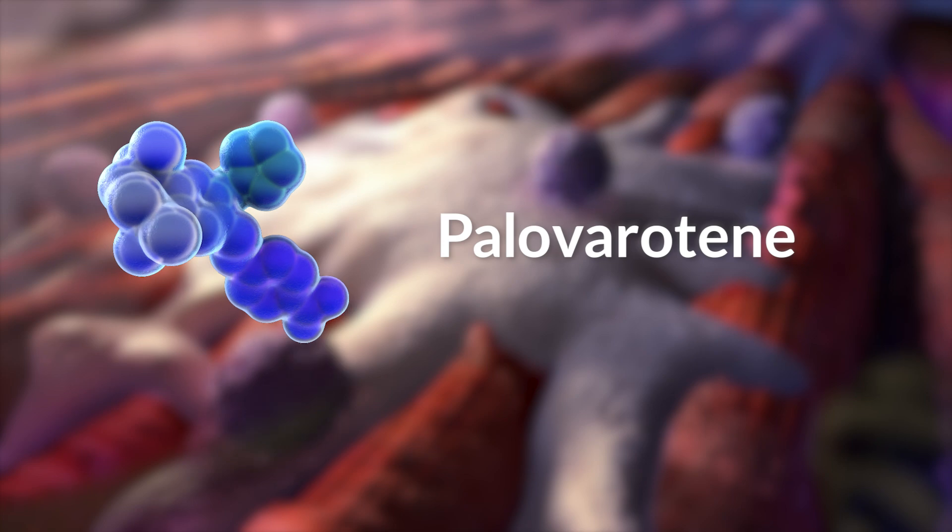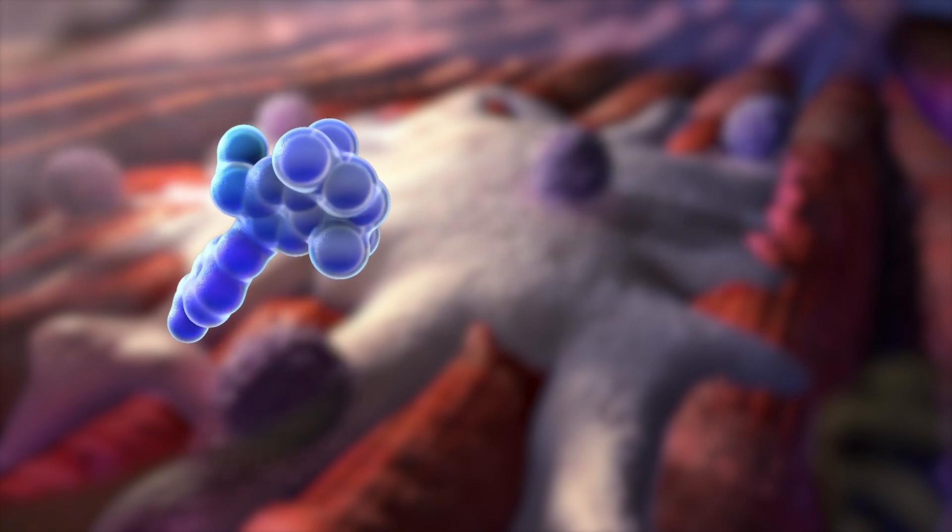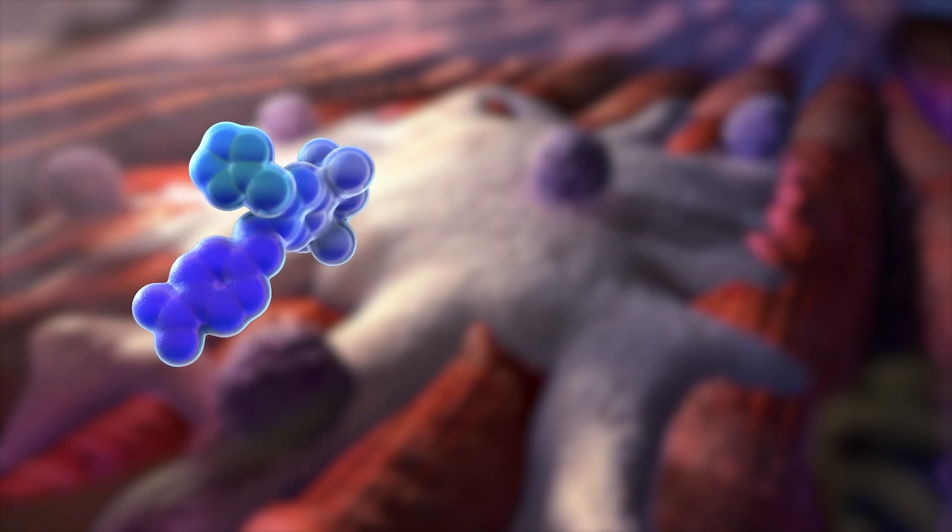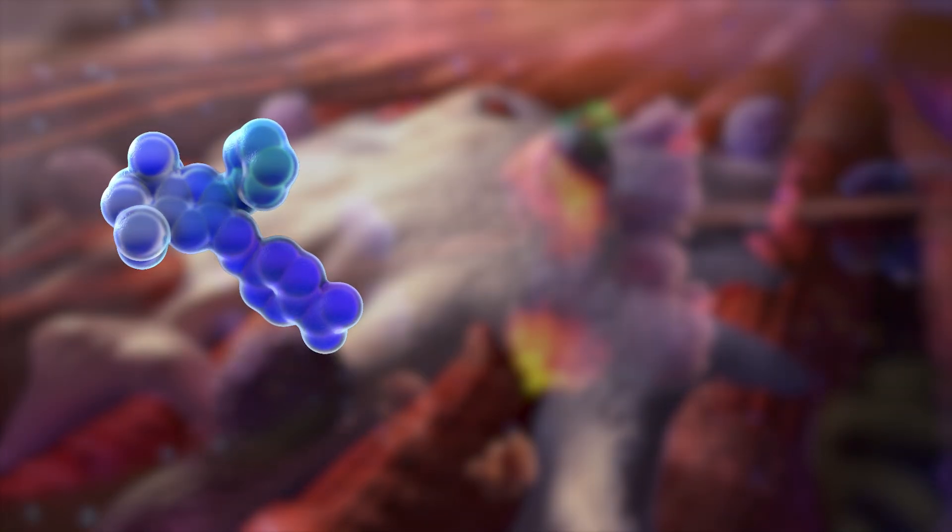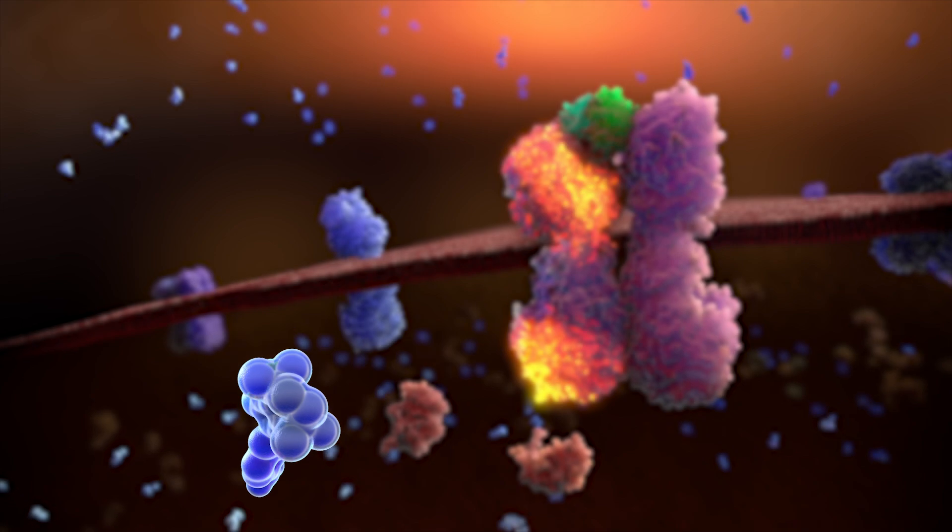Peloveratine is a retinoic acid receptor gamma agonist, or RAR gamma agonist, currently being investigated for its ability to prevent heterotopic ossification by inhibiting BMP signaling.